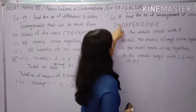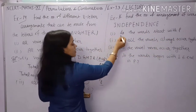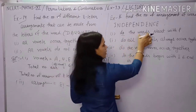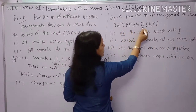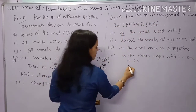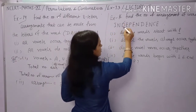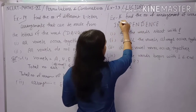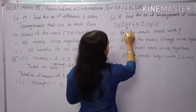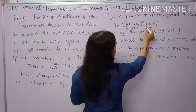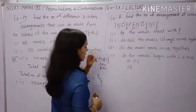Question 13: Find the number of arrangements of the word INDEPENDENCE. The word has 12 letters. Repetitions: N appears 3 times, D appears 2 times, E appears 4 times. Total arrangements = 12! / (3! × 2! × 4!).